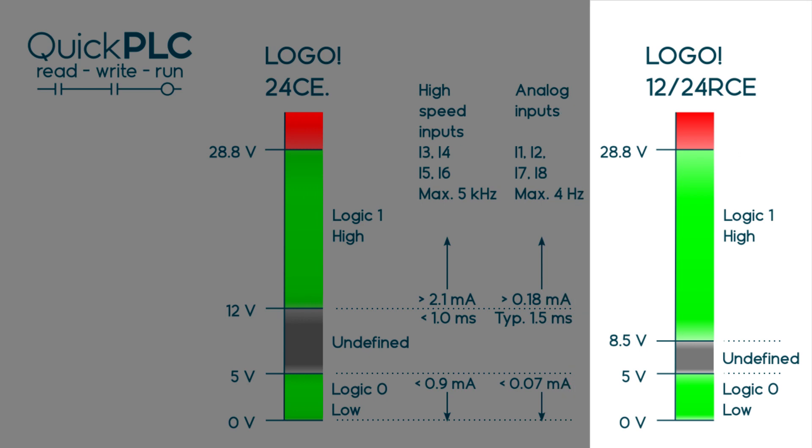The 1224 RCE is pretty much the same as the 24 CE we've just looked at. The noticeable feature is that the logic 1 threshold is reduced from 12 volts to 8.5 volts. This makes it a good choice for 12 volt battery powered systems as there's plenty of headroom for charging voltage.